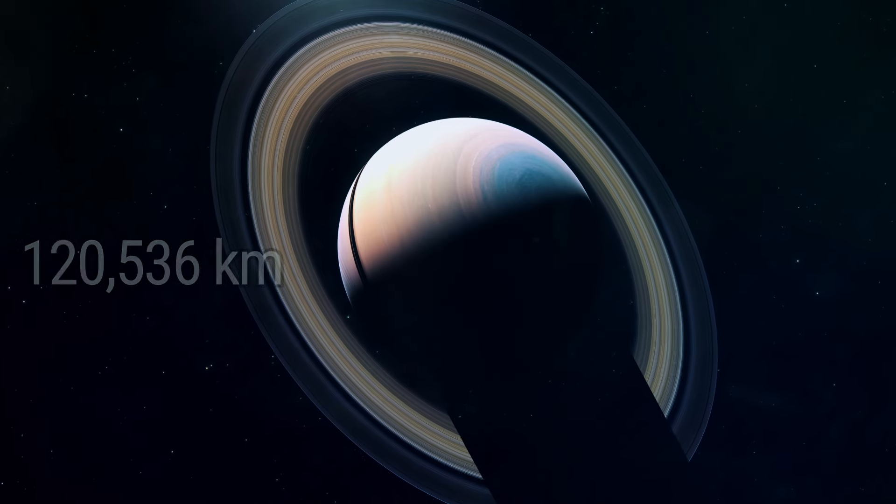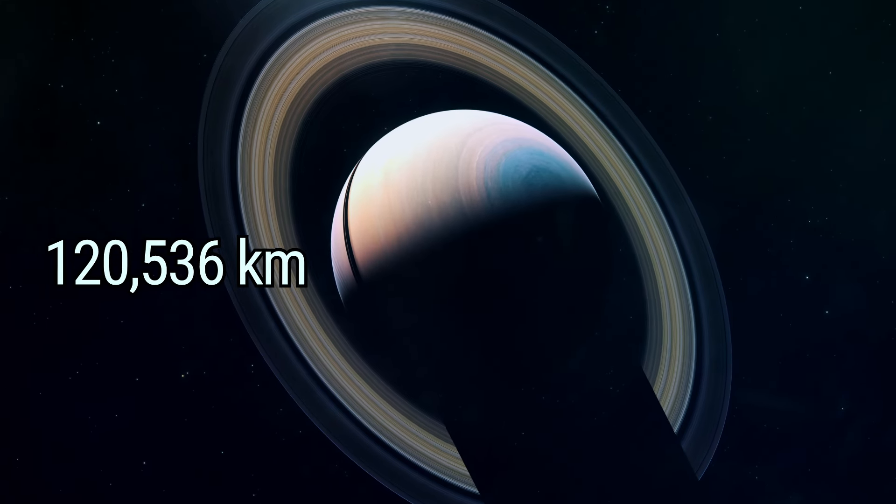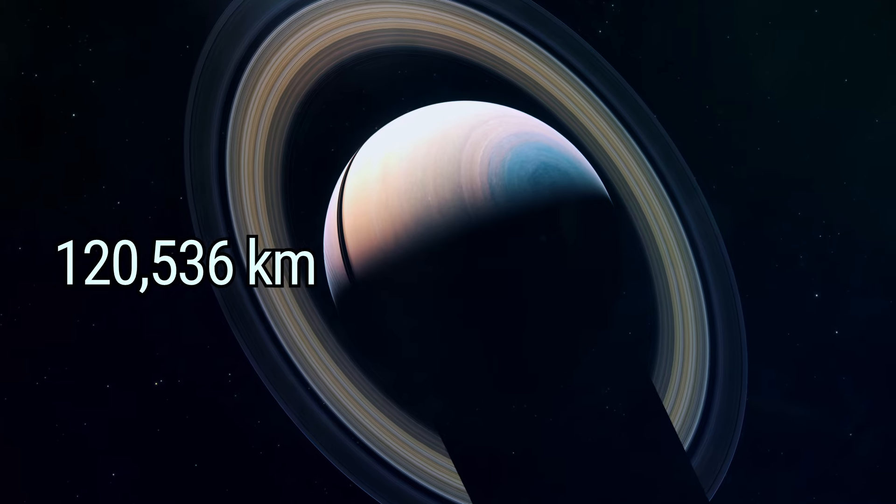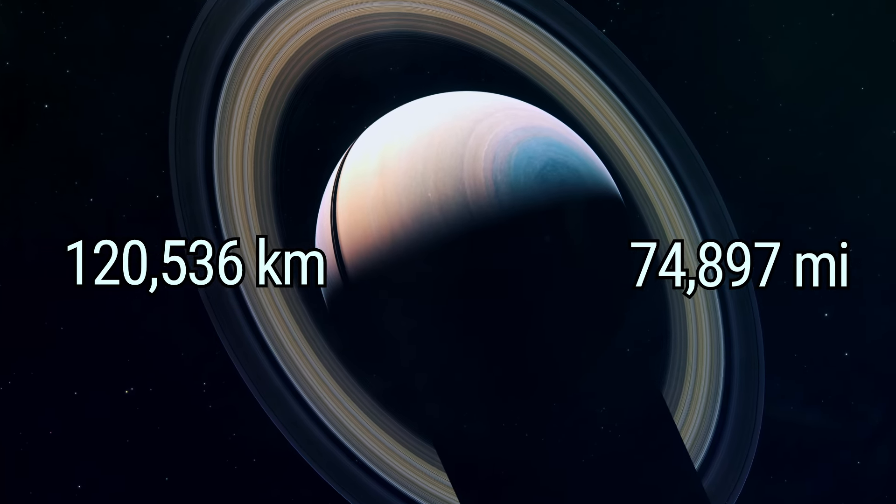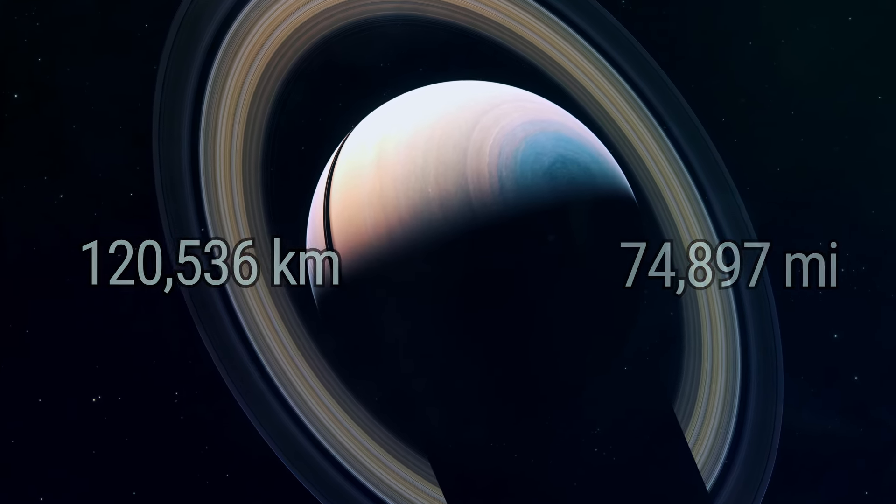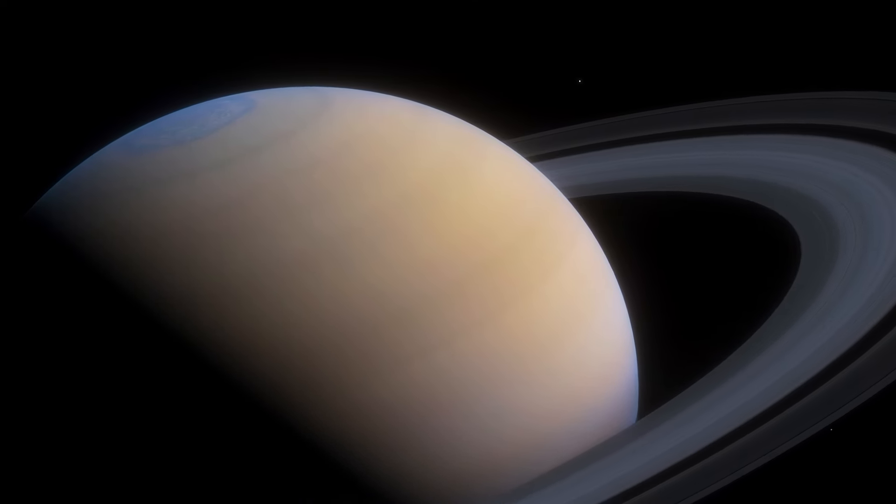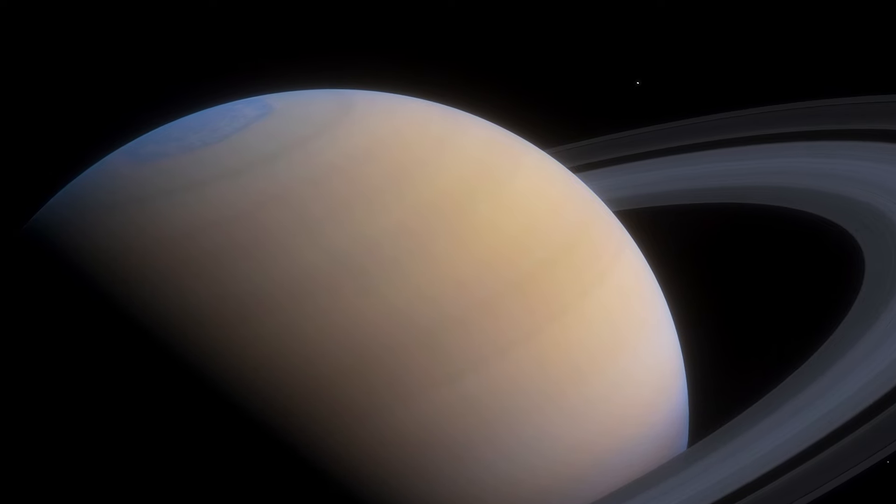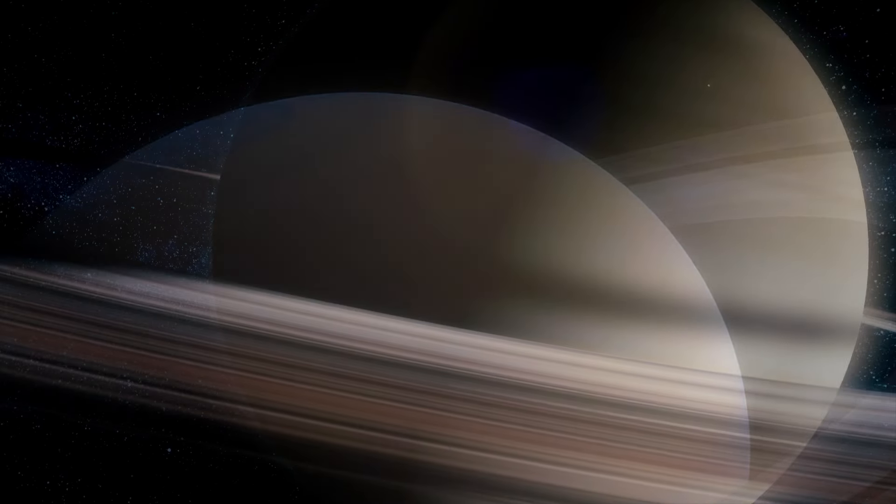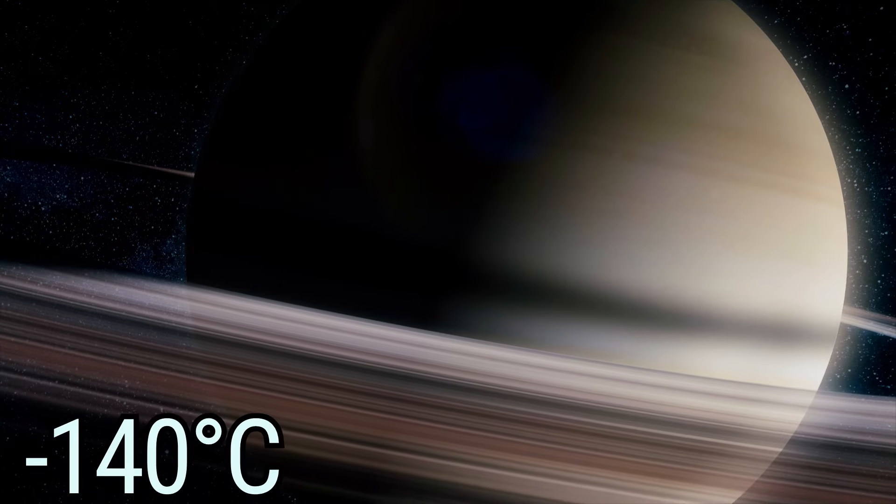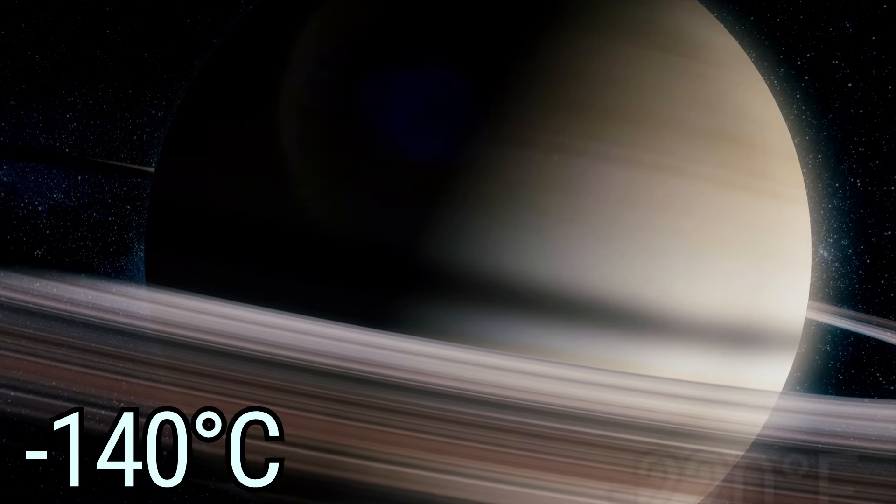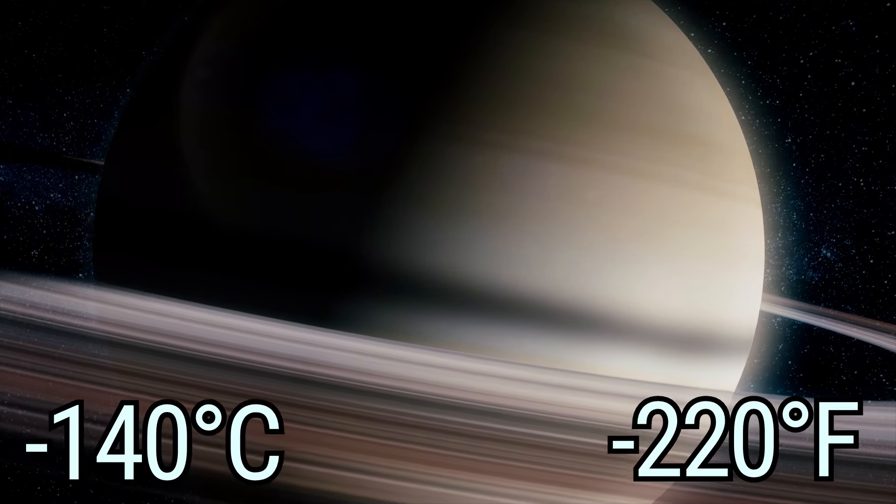This giant has a diameter of 120,536 kilometers, or 74,897 miles. Its atmosphere, primarily hydrogen and helium, blankets a core shrouded in mystery. Saturn's average temperature is around minus 140 degrees Celsius, or minus 220 degrees Fahrenheit.